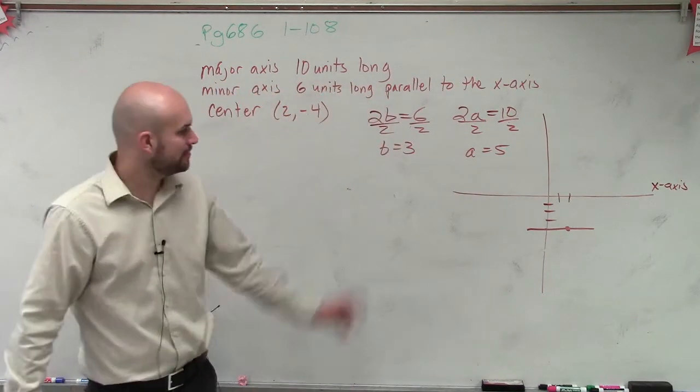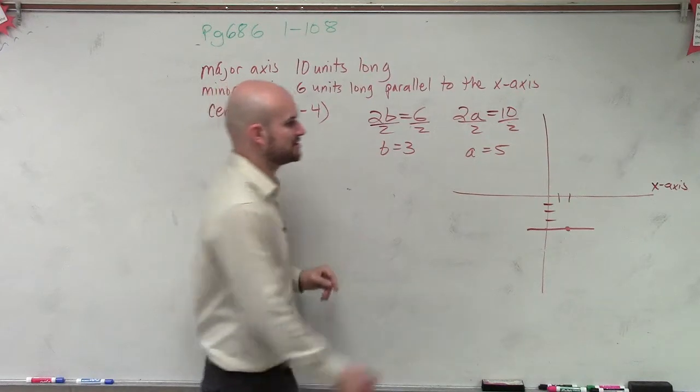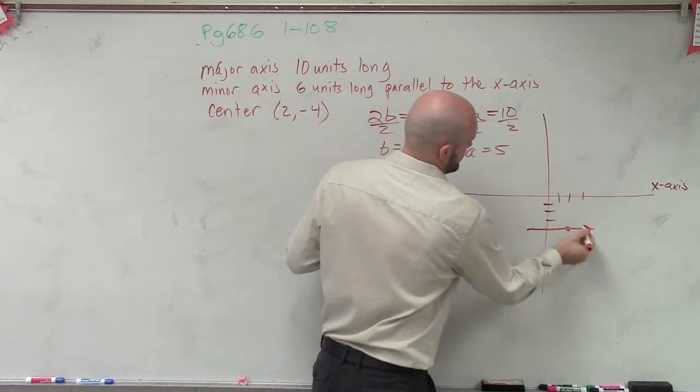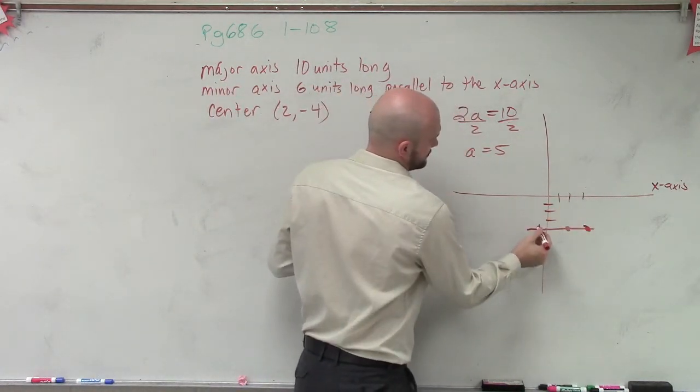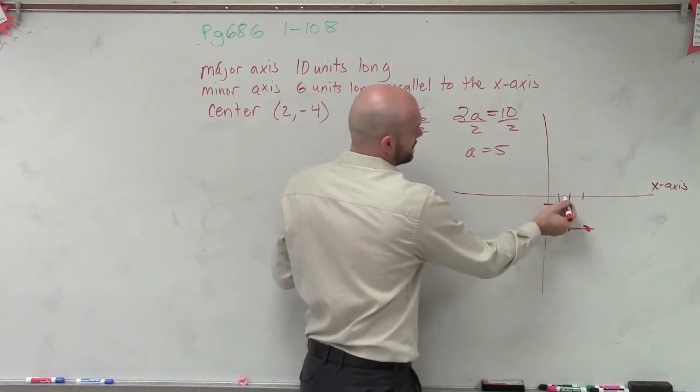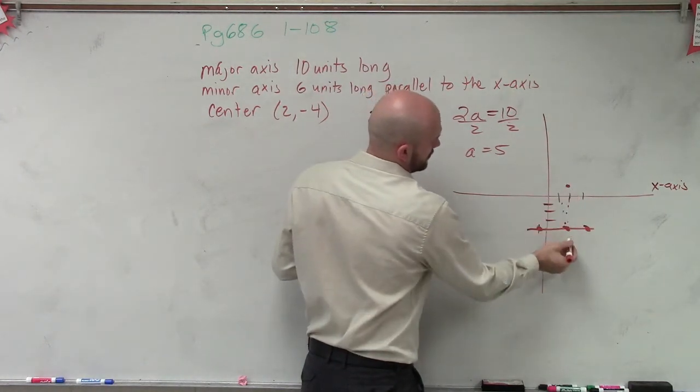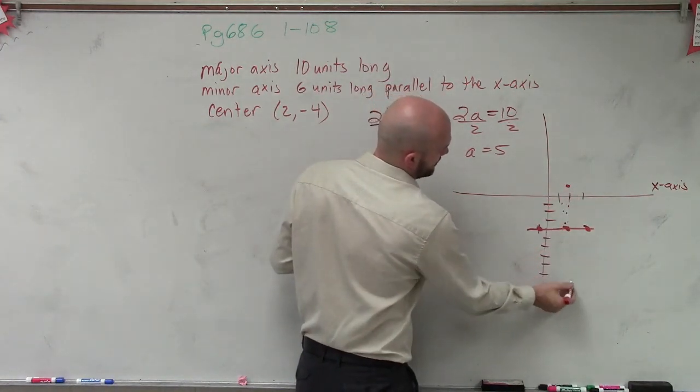Now we're not concerned on graphing them. But if you did want to graph them, remember, the center is in the center. So you'd go 3 units to the right and 3 units to the left. And those would be your co-vertices, and then a would be 5 units up.